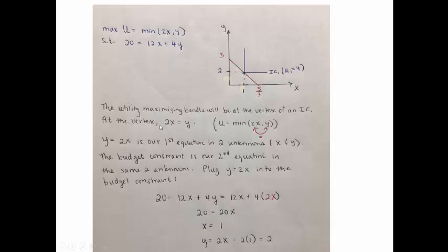Because we're going to be at the vertex, we know that at the optimal bundle, y will equal 2x. And we really get that from just very simply putting what's on one side of the comma equal to what's on the other side of the comma.